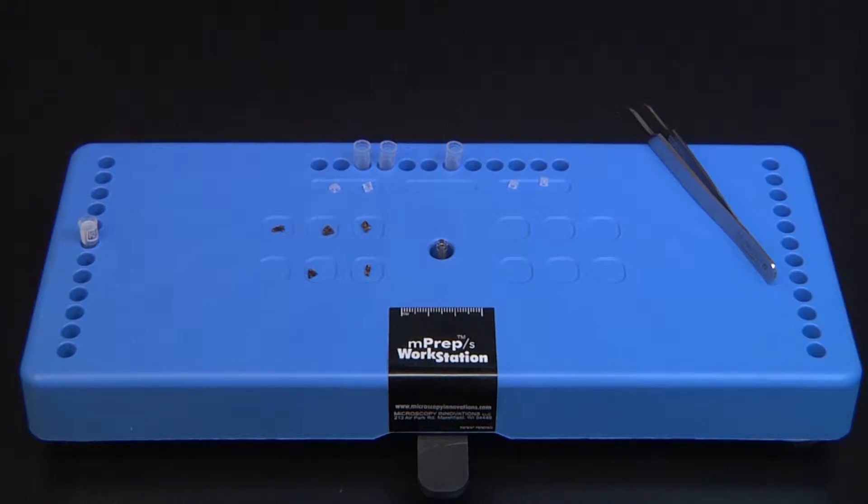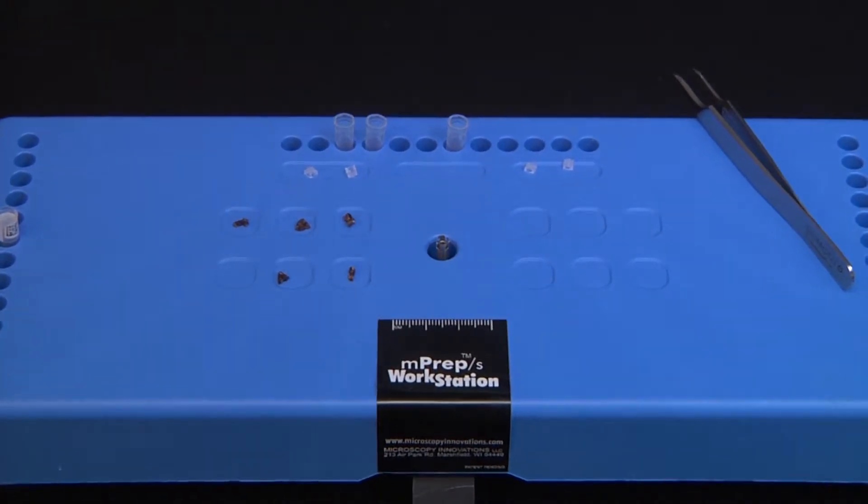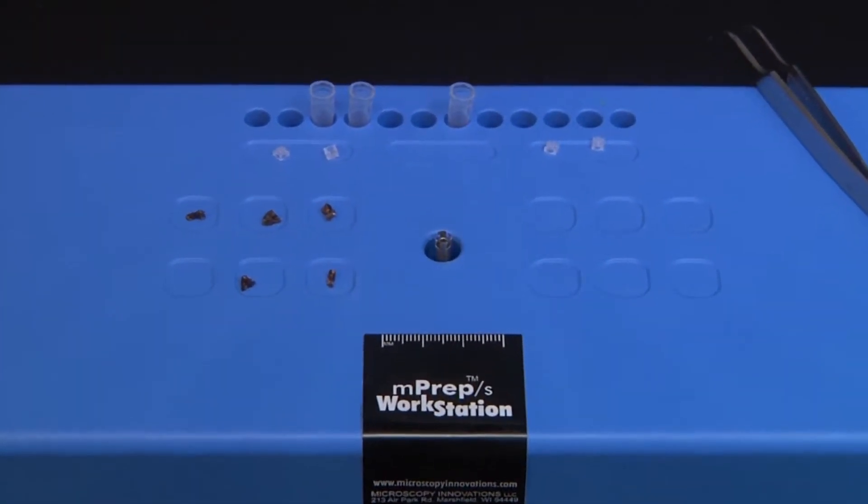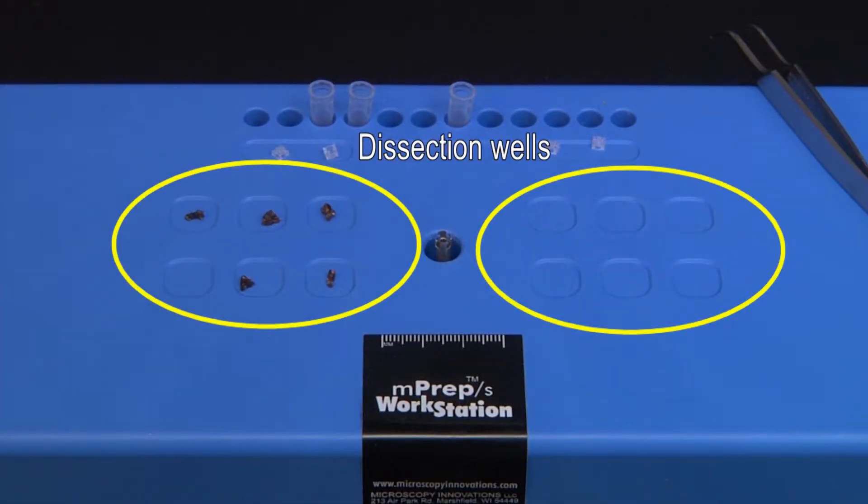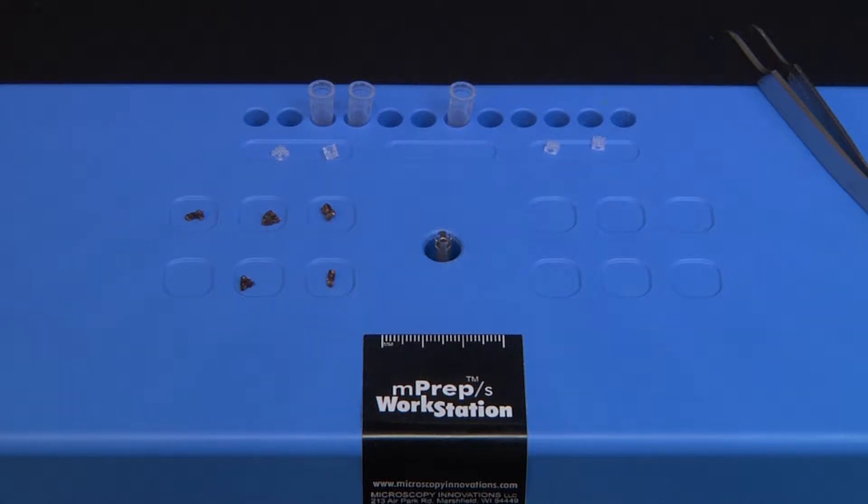The workstation top is made from soft polyethylene to enable dissecting and cutting specimens without dulling tools. Specimens can be kept organized and moist by dissecting in the 12 dissection wells.